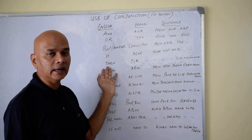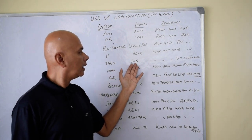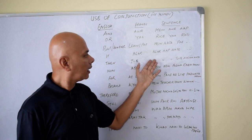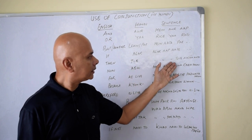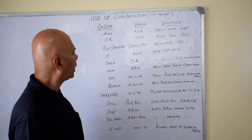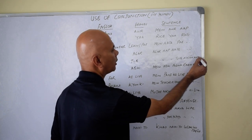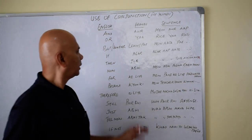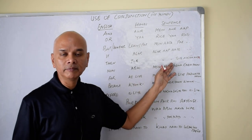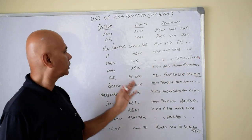Next is 'then,' which in Hindi is 'tab.' For example: Agar aap aate toh achha hota — if you had come, it would have been good. Tab achha hota means 'then it would have been good.'